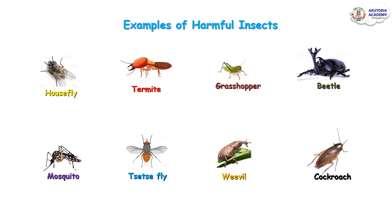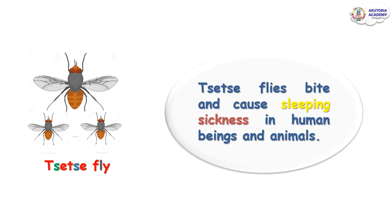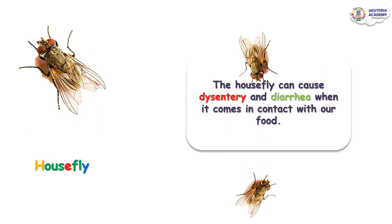A mosquito bites and transmits the malaria parasite into the blood, causing malaria fever. The tsetse fly bites and causes sleeping sickness in human beings and animals.